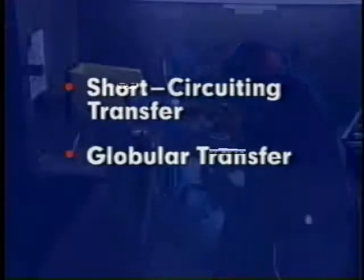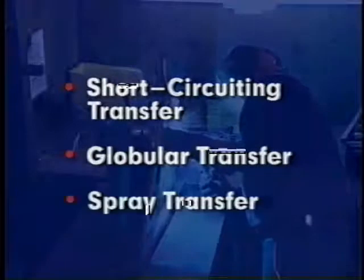The characteristics of the gas metal arc welding process are best described in terms of the three basic modes by which metal is transferred from the electrode to the work: the short circuiting transfer, the globular transfer, and the spray transfer.